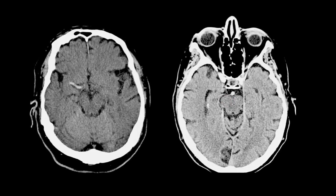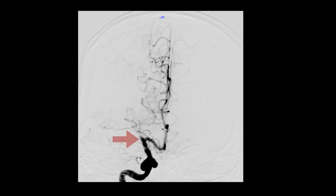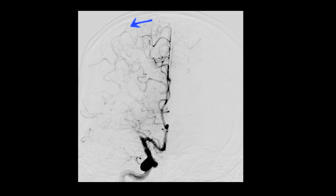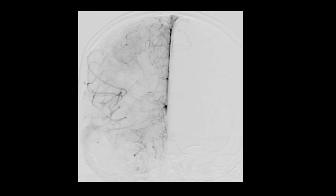We can confirm direct visualization of the clot by performing CT angiography, where the segment that appears hyperdense on non-contrast imaging appears as hypoenhancement or a filling defect. The same direct visualization can be seen on catheter angiography. In this case, the M1 segment is occluded and we can see collateral flow across from the anterior cerebral circulation to supply at least part of the middle cerebral artery territory.